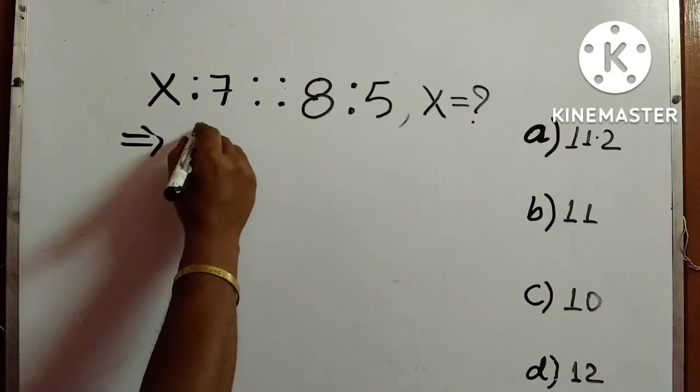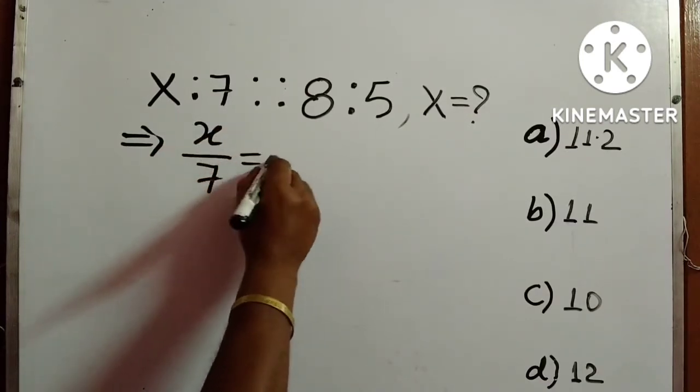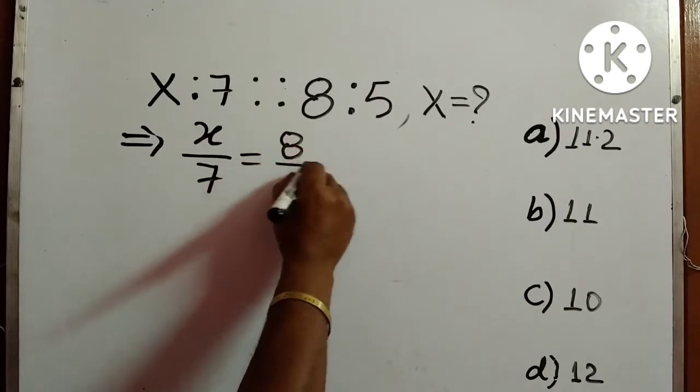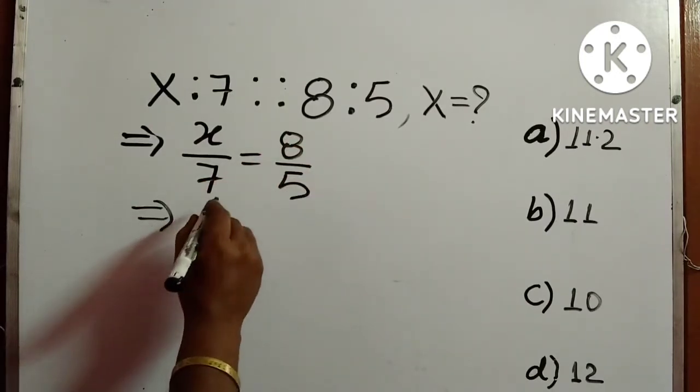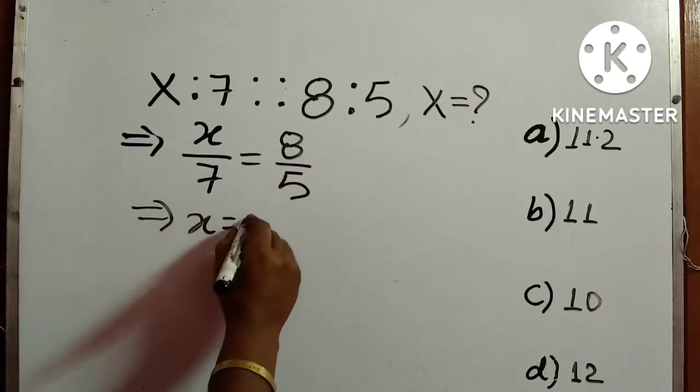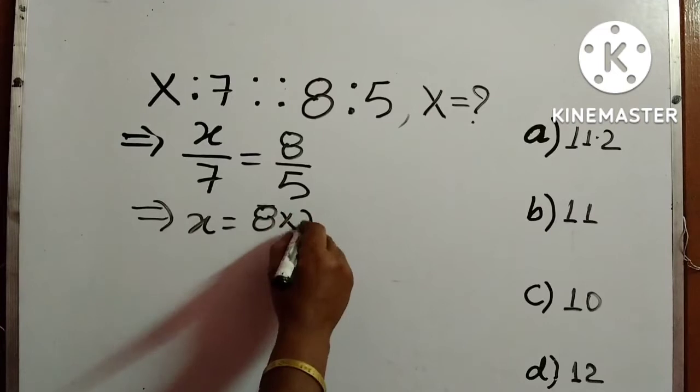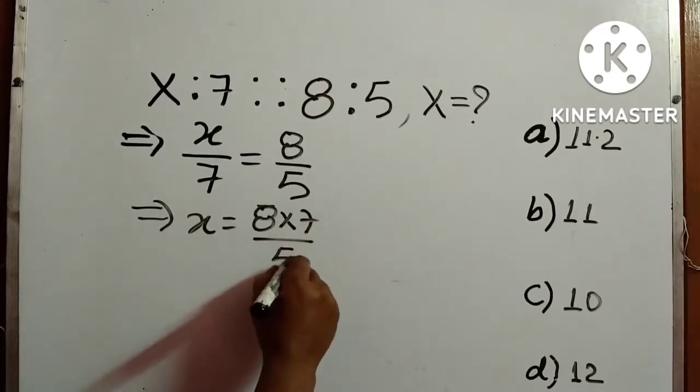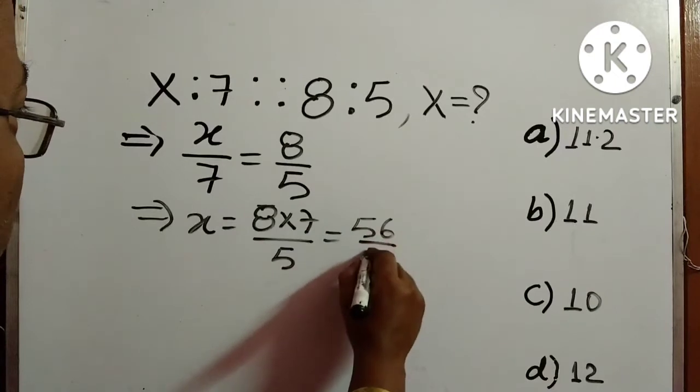This one we can write like this: x by 7 is equal to 8 by 5. So x is equal to 8 times 7 by 5, which is equal to 56 by 5.